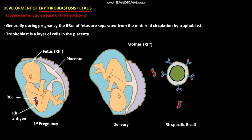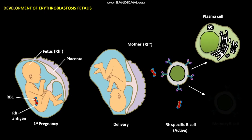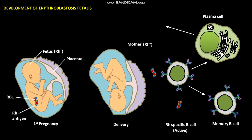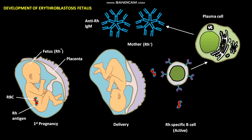The inactive Rh-specific B cells become active, and as a result, two types of cells are formed in the mother: Rh-specific plasma cells and memory B cells. The plasma cells secrete IgM antibodies, or anti-RH IgM. The anti-RH IgM clears the fetal RBCs with Rh antigen from the maternal circulation, but memory B cells remain within the mother's circulation.